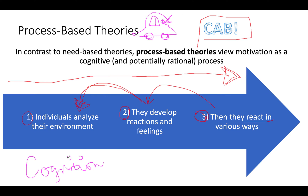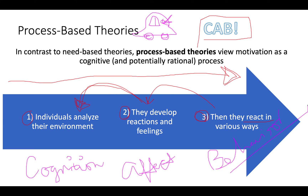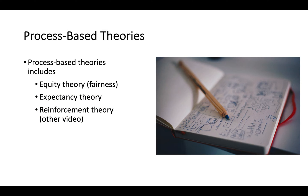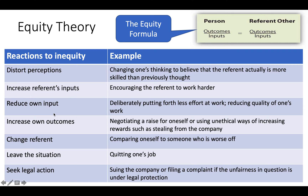Cognition is thinking about the environment. Number two is affect — affect is our feelings. So we have cognition: we think about the event; we have feelings in response — that's the affect; and after that comes our behavior. All of that together makes CAB. When you are thinking about the process-based theories, your memory technique is CAB: Cognition, Affect, Behavior. We will cover equity theory first.